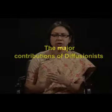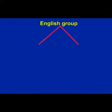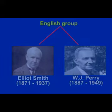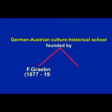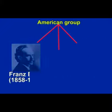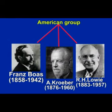Three schools have made diffusion basic to their formulation and study of cultural dynamics. They are: the English group composed of Elliot Smith, W.J. Perry, and their followers; the German-Austrian culture historical school founded by Graebner and W. Schmidt; and the American group associated with Franz Boas, Kroeber, Lowie, and others.